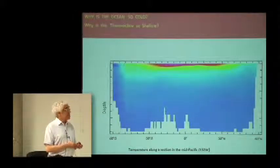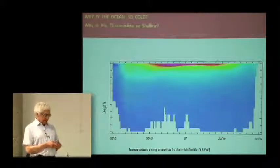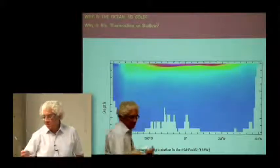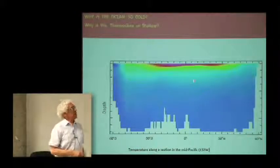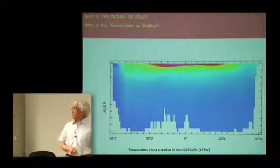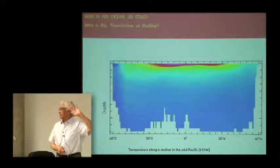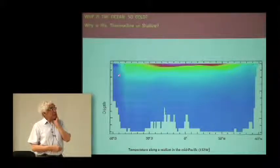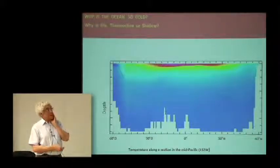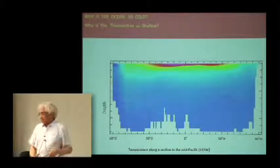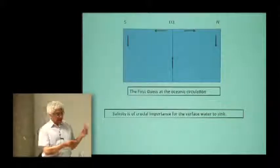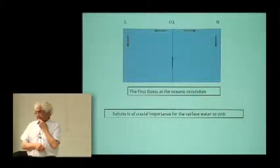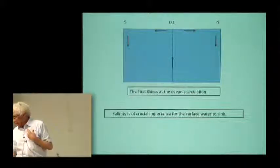The deep ocean is amazingly homogeneous. It's about three to four degrees centigrade North Pacific, South Atlantic, Southern Ocean. Salinity is about the same, varies very little. One conclusion is that the source for all this water must be some high latitude. The water must be sinking there. That's the reason for thinking, this is the first guess for the circulation.